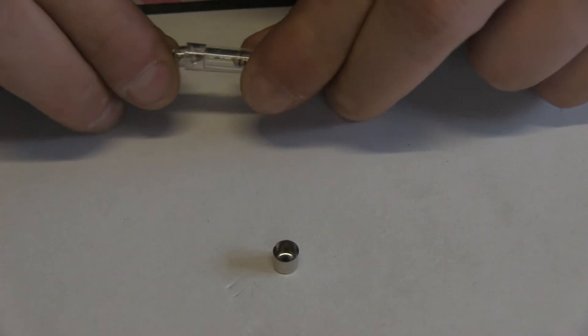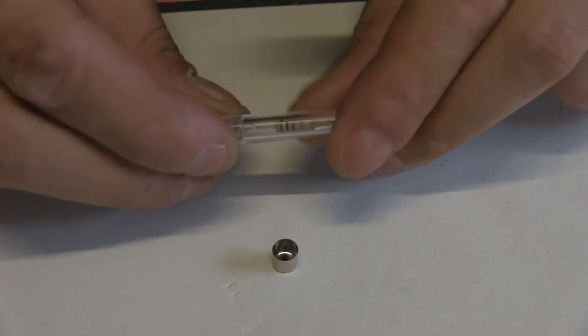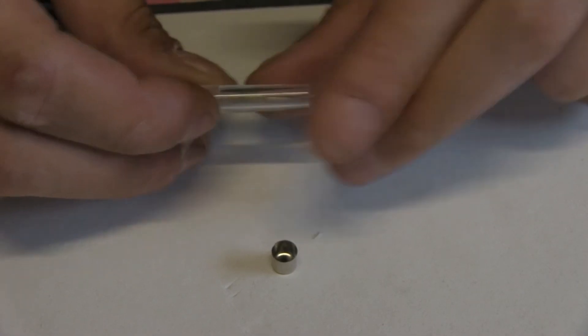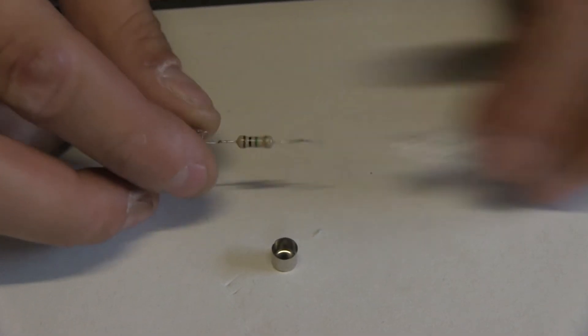And this is the neon light bulb with the resistor, one mega ohm resistor. I'm not being able to see the color codes.